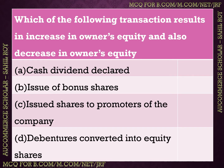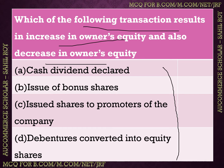Which of the following transactions results in both an increase and a decrease in owner's equity? We have four options: (A) cash dividend declared, (B) issue of bonus shares, (C) issued shares to promoters of the company, and (D) debentures converted into equity shares. The correct answer is Option B — issue of bonus shares — because in this transaction, owner's equity both increases and decreases.